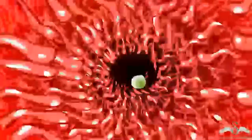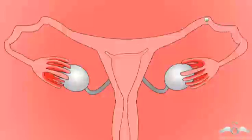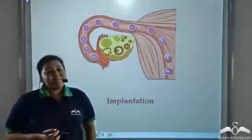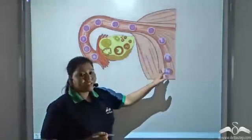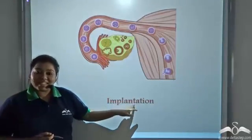The structure that facilitates the movement of the fertilized ovum along the oviduct towards the uterus is the cilia present in the oviduct. The cilia continuously move and push the zygote towards the uterus, where it gets embedded. This embedding of the blastocyst on the uterine wall is known as implantation.